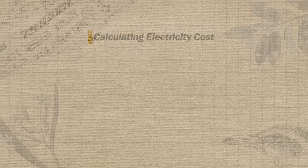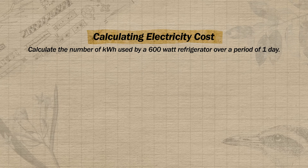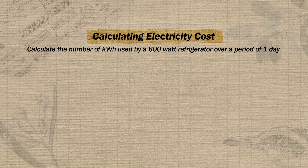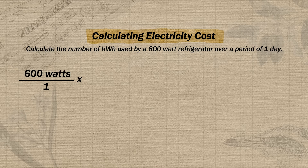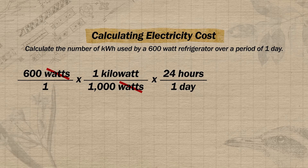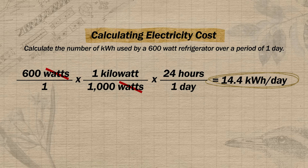People come to APES at all four grade levels in high school with different math backgrounds, so I want to make sure everyone is prepared for the exam in May. For the second type of kilowatt hours problem, you may be given the wattage of a device and the duration it's used, and asked to calculate kilowatt hours consumed. First convert your watts to kilowatts by multiplying by 1 kilowatt over 1000 watts, then multiply that kilowatt value by time to arrive at kilowatt hours.